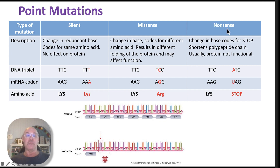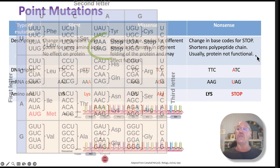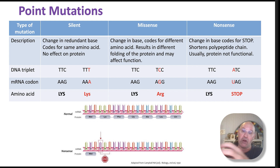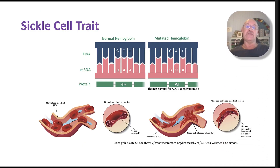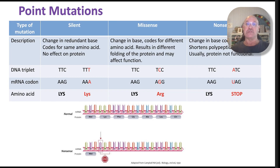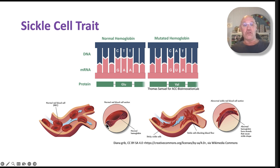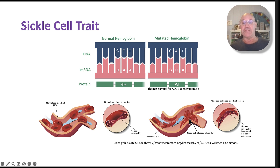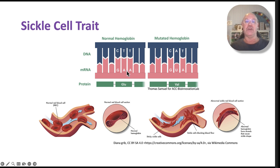Then we have nonsense mutations — a change in a base that now codes for a stop codon. Ultimately, the polypeptide chain is truncated, because the stop codon tells the ribosome to stop translation. Here's an example: a single point mutation causing a missense mutation — one change in an amino acid — results in normal red blood cells taking on a sickle cell shape. This causes blockages in small blood vessels and reduced capacity to carry hemoglobin — that's sickle cell anemia, arising from a single mutation.